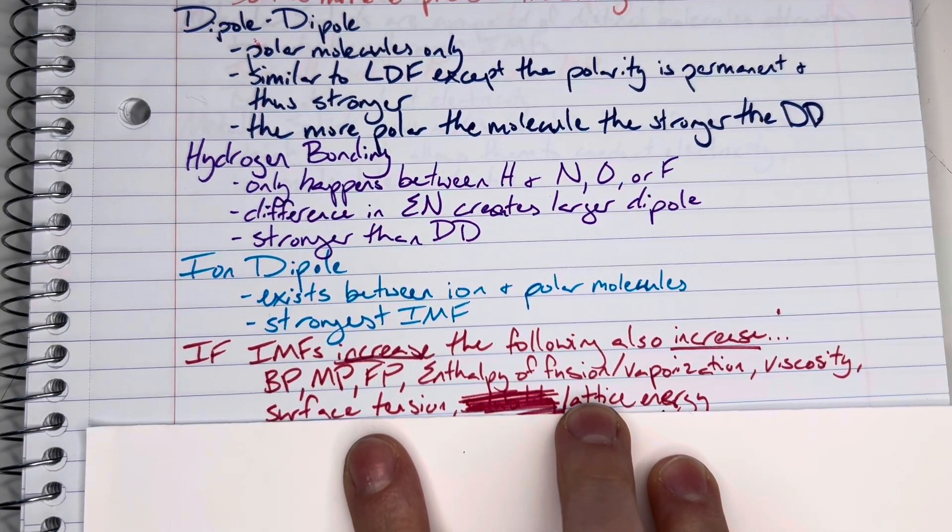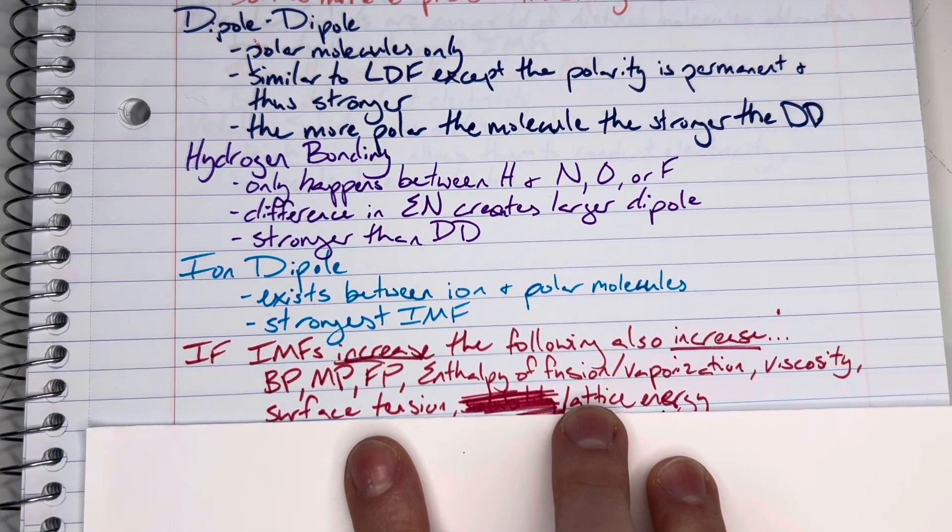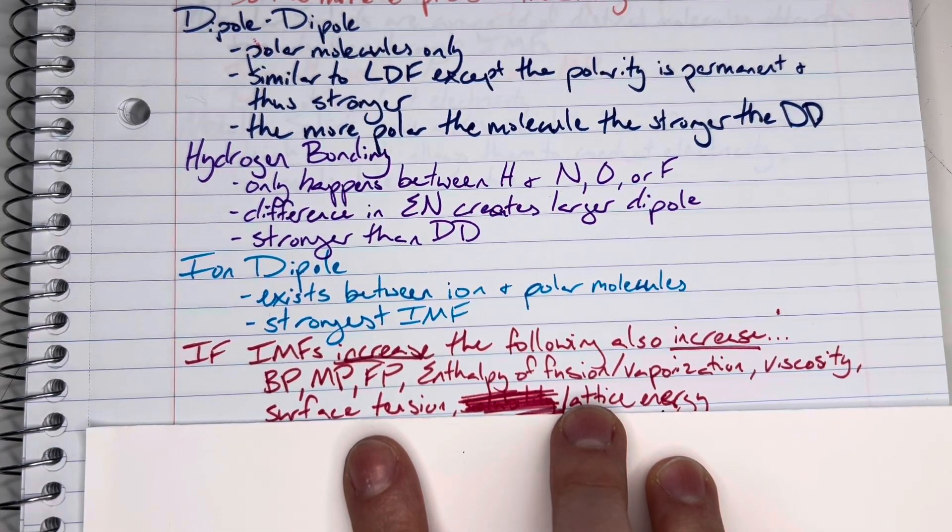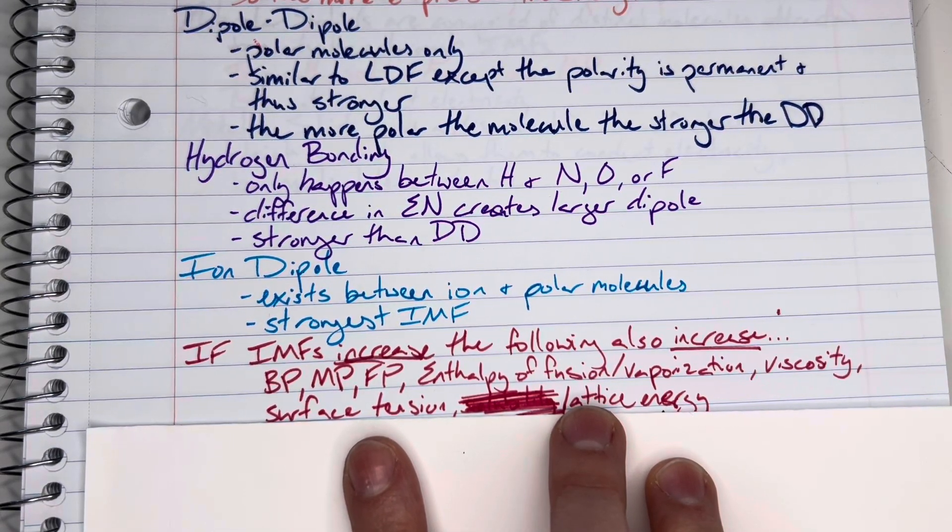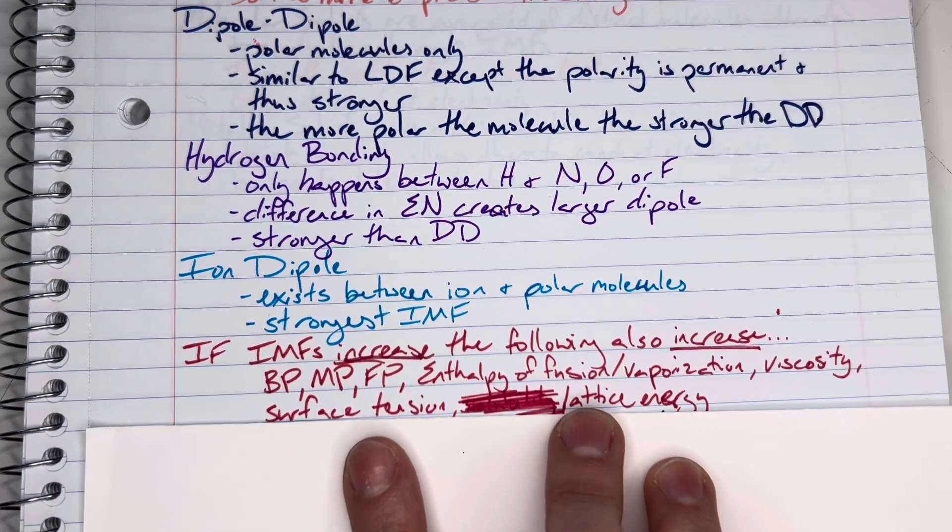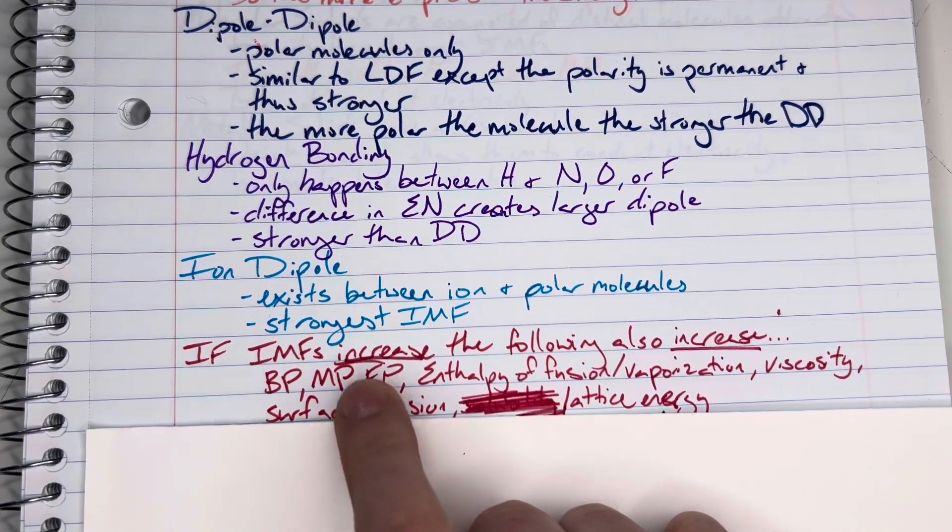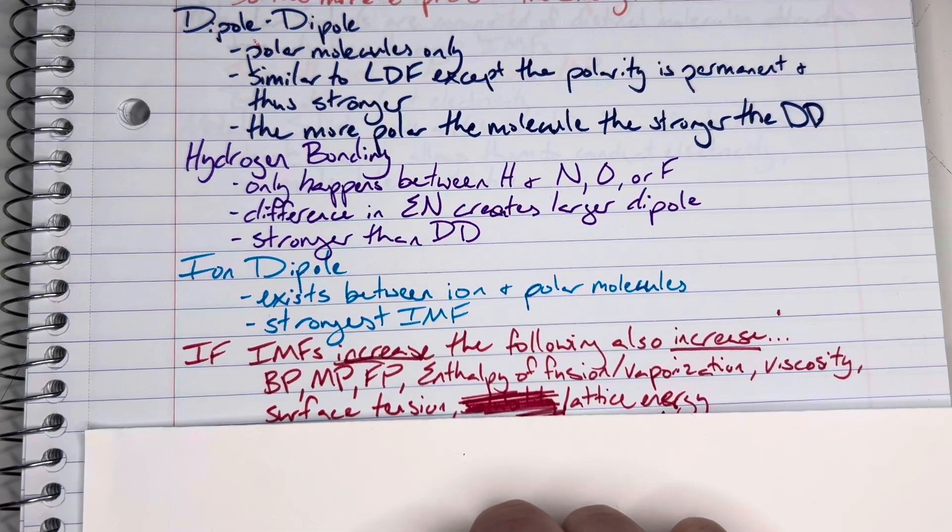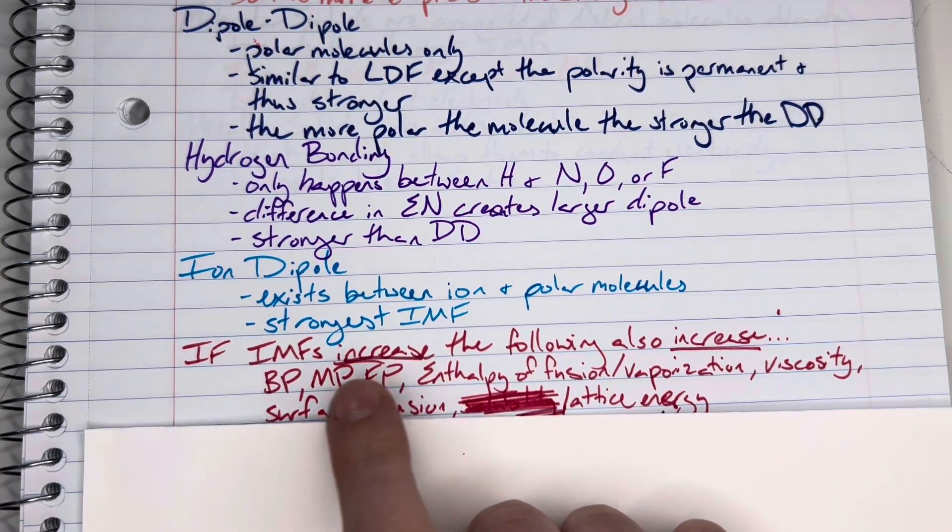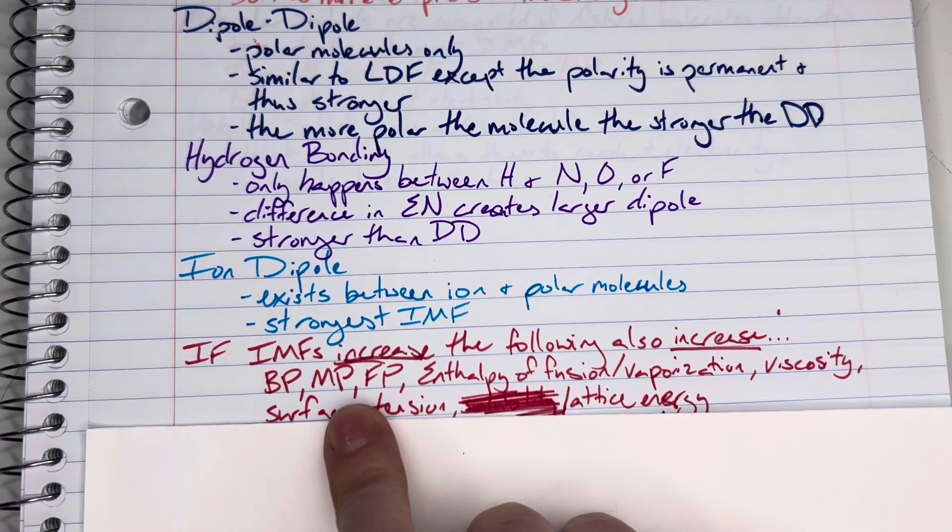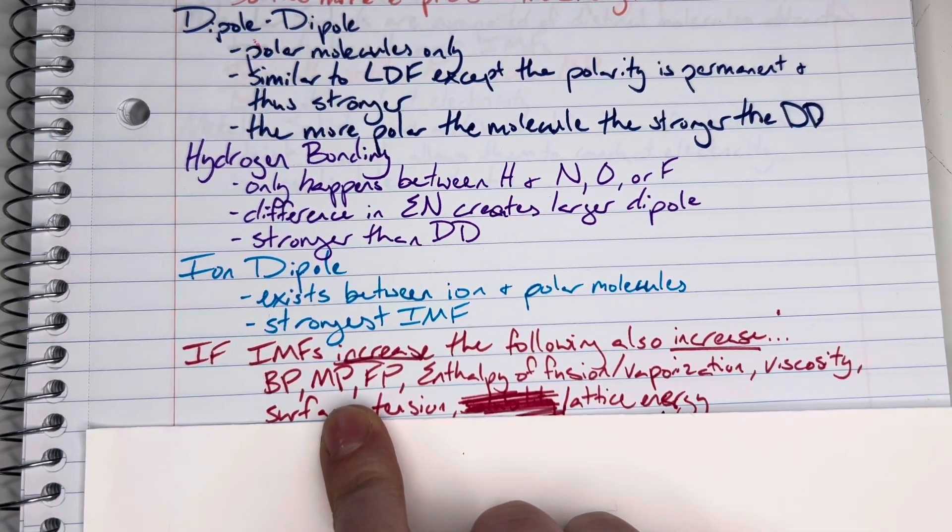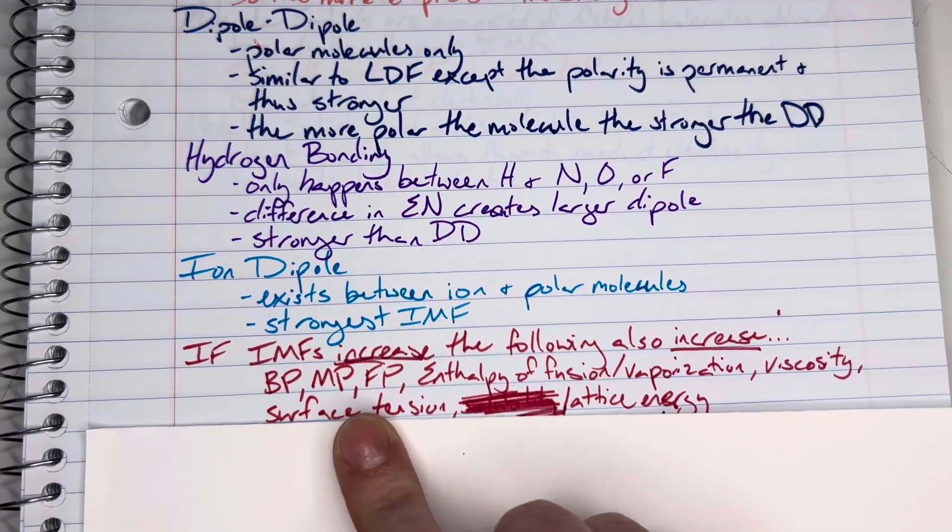Remember that your intermolecular forces is going to be your attraction between different molecules, and so if I am more attracted to my neighbor, I am less likely to let go of them. It will take more energy to boil or melt or freeze, unfreeze, melting point and freezing point kind of the same thing. But it will take more energy in order for me to let go of my neighbor, and therefore those are going to increase.